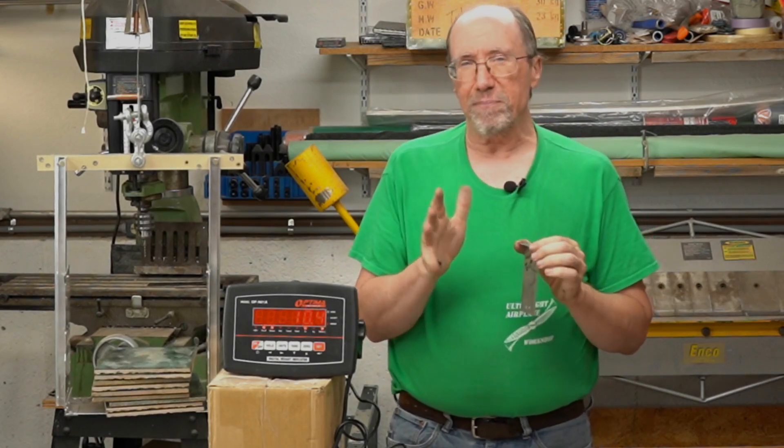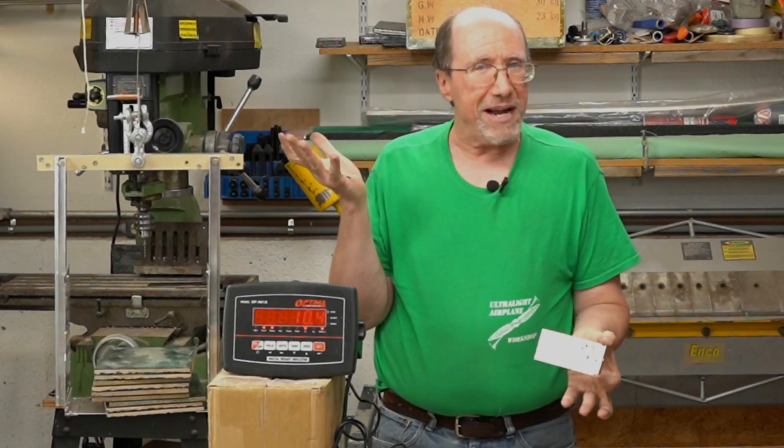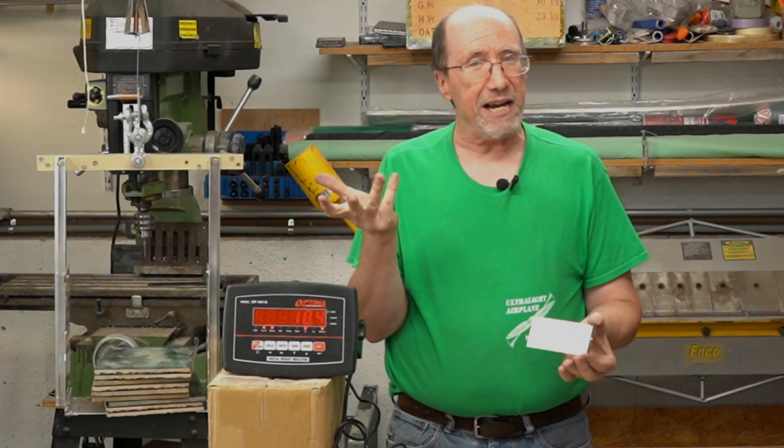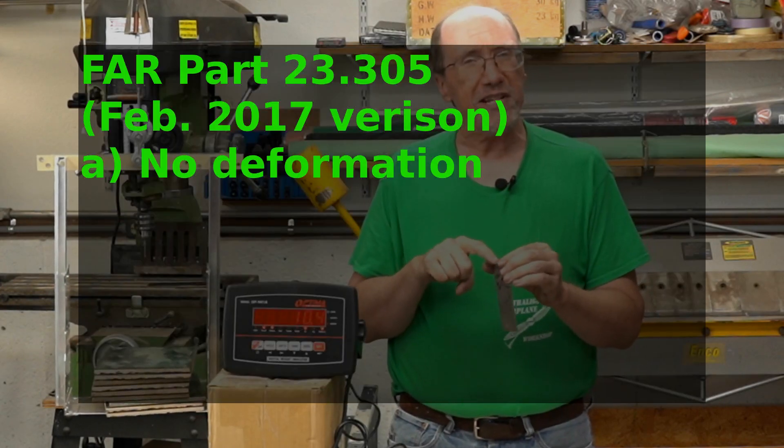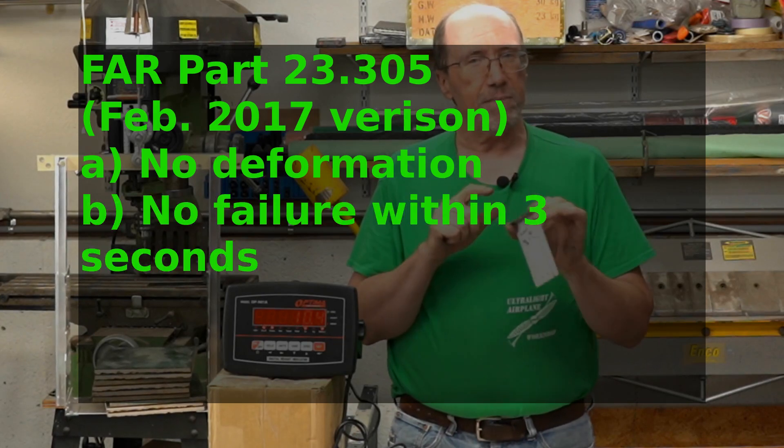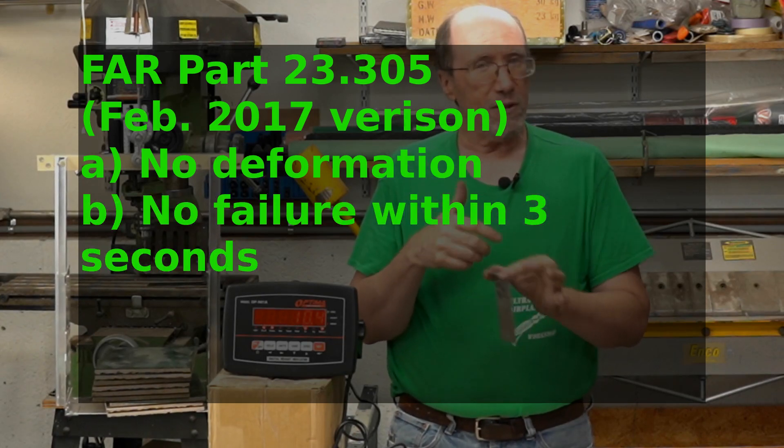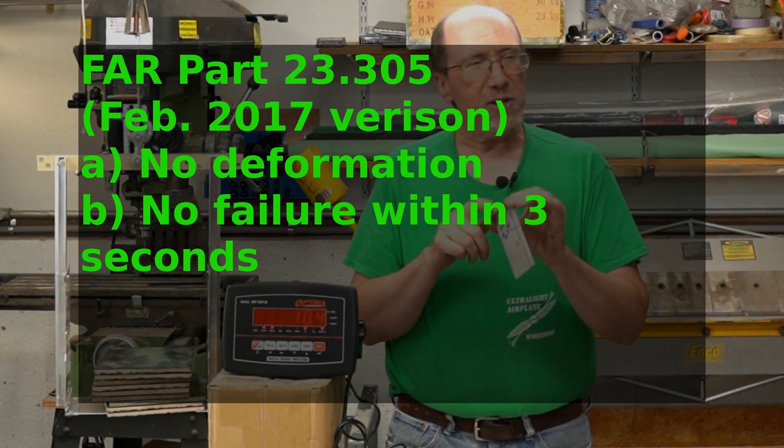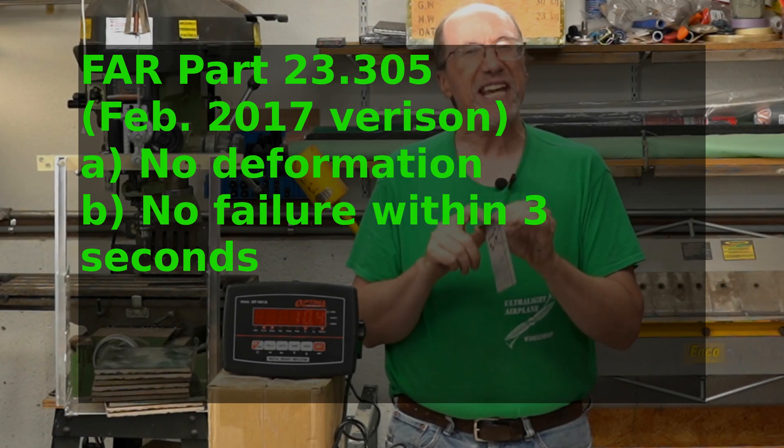Now that's actually allowable in part 23. Of course, we don't need to match part 23. We're just using it as a guide. Part 23 says that at your maximum load, you should not have any deformation of anything. But at the ultimate load, with the 1.5 safety factor, you can have some deformation. You just can't let it fail.